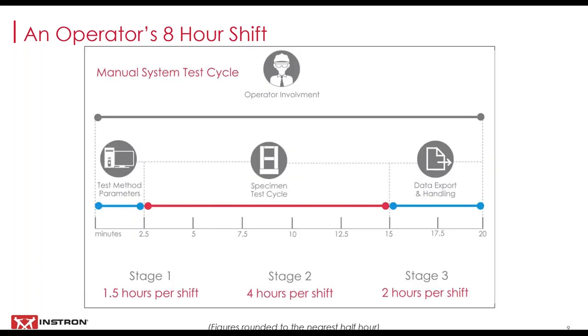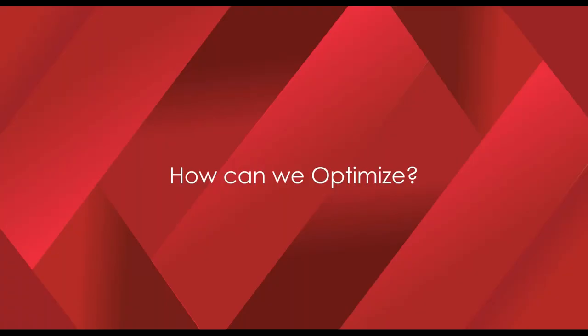Plotting this on a timeline, you can see how much of the seven-and-a-half minute cycle time is taken up by each of the three stages. In an eight-hour shift, one and a half hours are spent on testing parameters, four hours are spent on the specimen test cycle, and two hours are spent on data export and handling. So we've gone over the different phases of a test, the time requirements associated with each stage, and who is involved along the way. Now how can we optimize things?